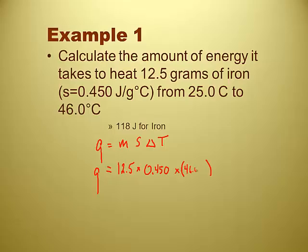And then delta t is a matter of temperature 2 minus temperature 1. So 46.0 minus 25.0. And I'm going to do that first. You got to please excuse my dear aunt Sally. So do you want to do all that math? 21.0 for the change in temperature.